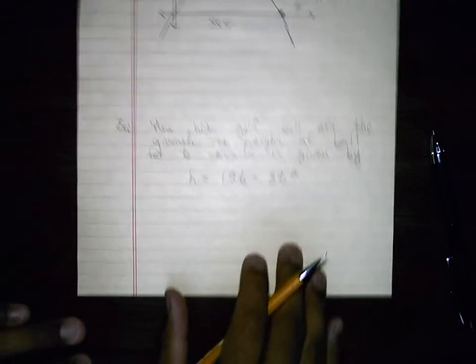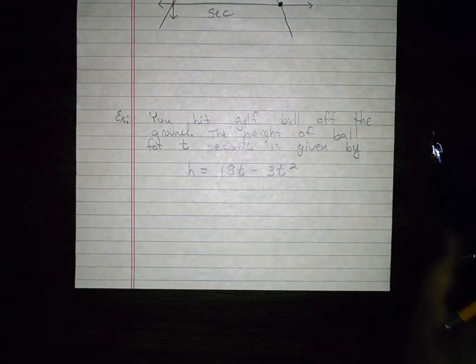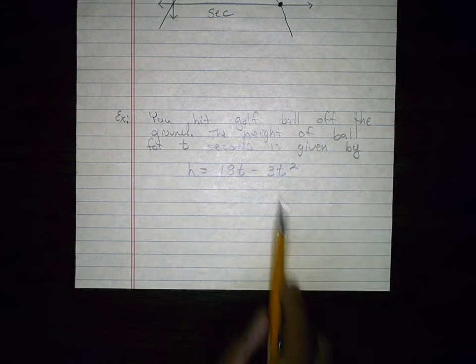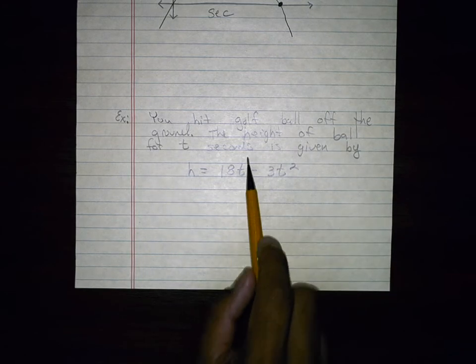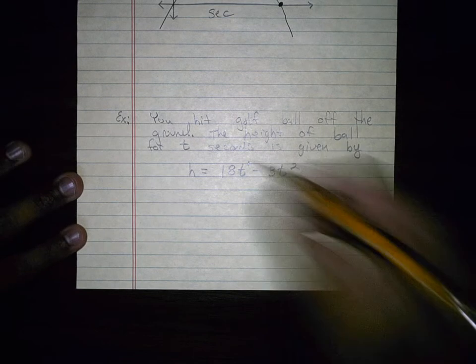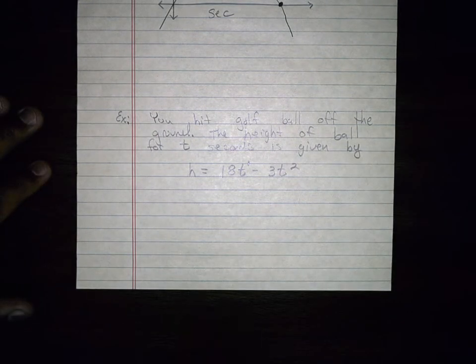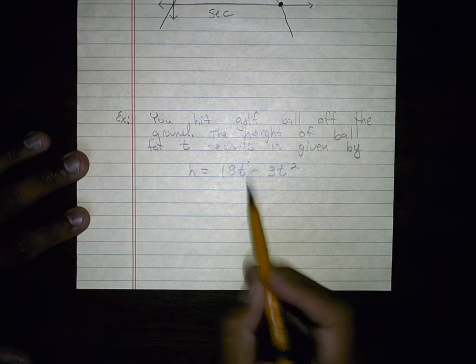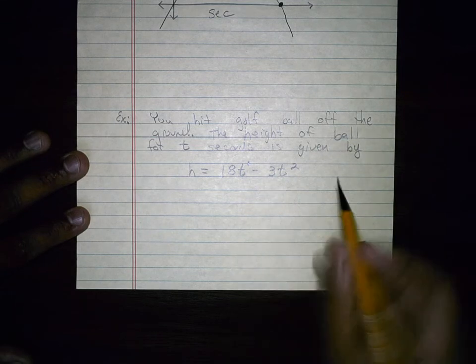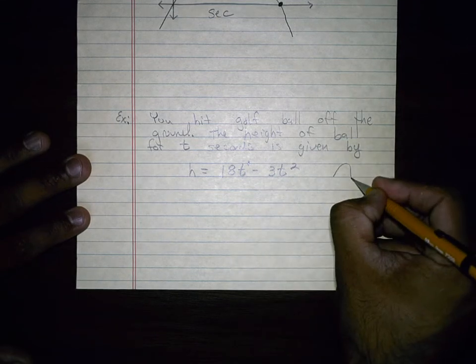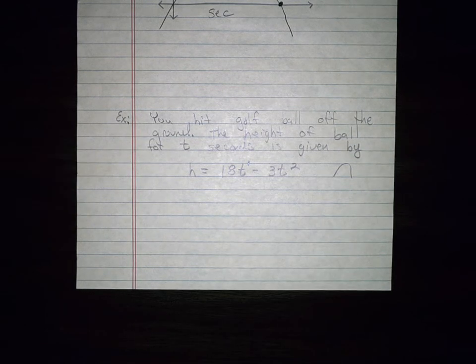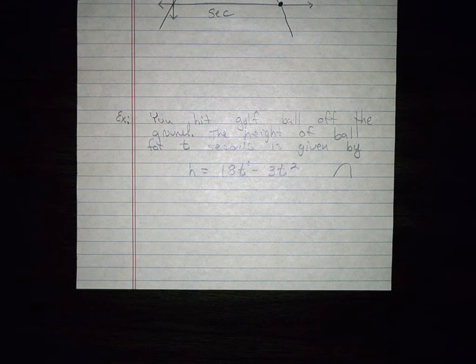Alright, so let's do an example. You hit a golf ball off the ground. The height of the ball for t seconds is given by this particular parabola. So you can see this is in the standard form because I have a t to the power of 1. t to the power of 1. It is written backwards. So this is actually a downward facing parabola because the value in front of the t squared is negative. So the first thing is first, let's find the vertex.